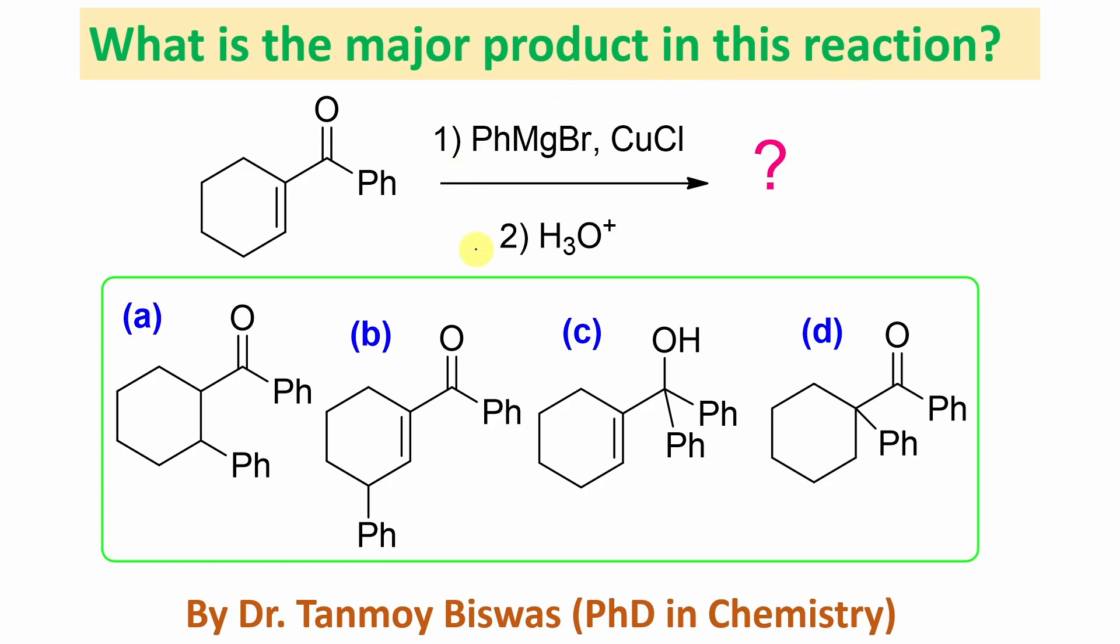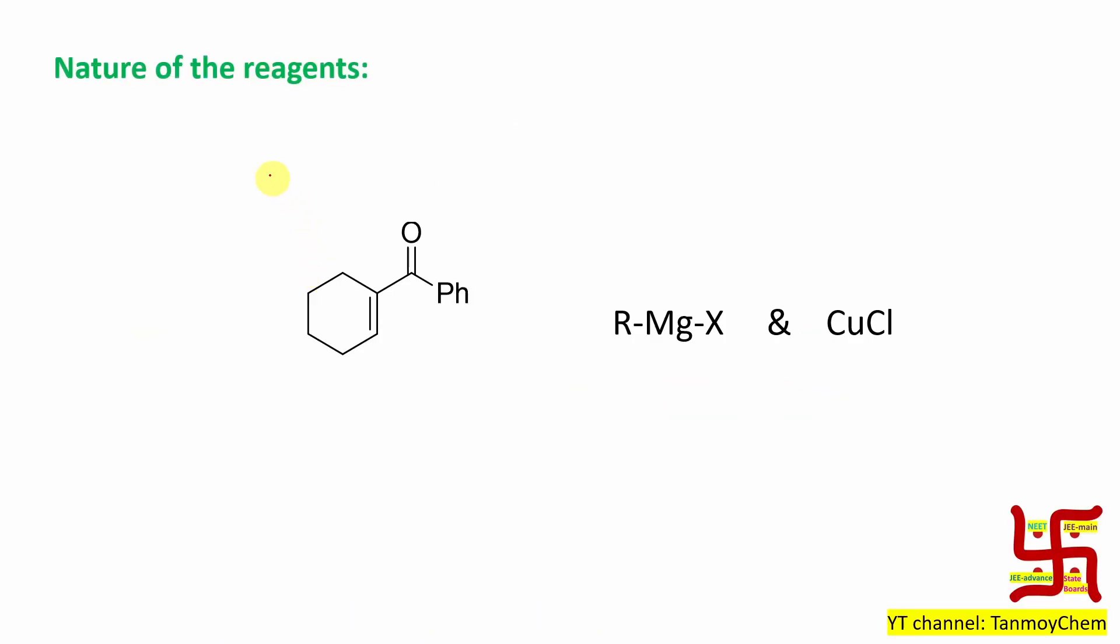Now, what is the major product of this reaction? What is this compound? This is actually alpha-beta unsaturated carbonyl. Here Grignard reagent along with copper(I) chloride and later on workup. What is the product, four options are provided. Before going to the main topic or mechanism, let's learn the nature of the reagent.